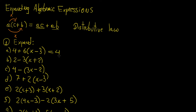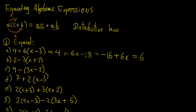For the first one, we have 4 plus 6 times x, and then minus 3 times 6, which is minus 18. Now we have two constant terms we can add together: 4 minus 18, that's going to be minus 14. So we can write it as 6x minus 14.